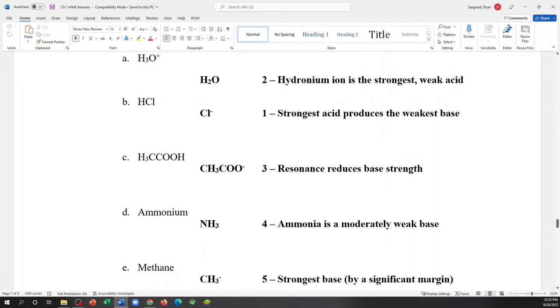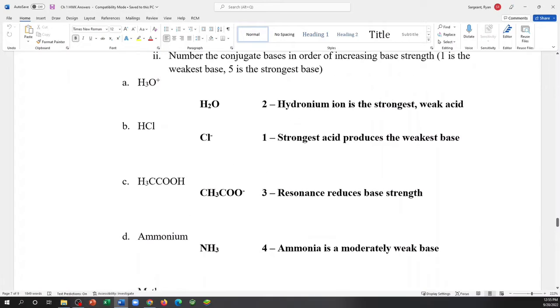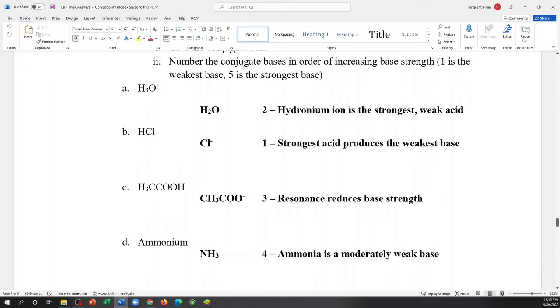So for example, hydrochloric acid is the only strong acid on here. Therefore, its conjugate base should be the weakest base. That's why the chloride ion gets the number one. It's the weakest base because it comes from the strong acid, the strongest acid.